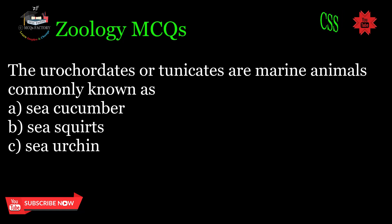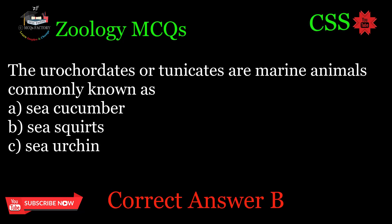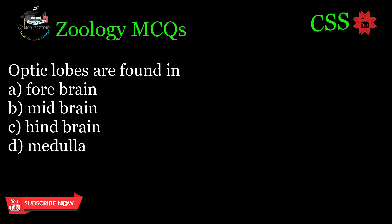Chordates or tunicates are marine animals commonly known as: A. Sea cucumber, B. Sea squirts, C. Sea urchin. Correct answer: B.